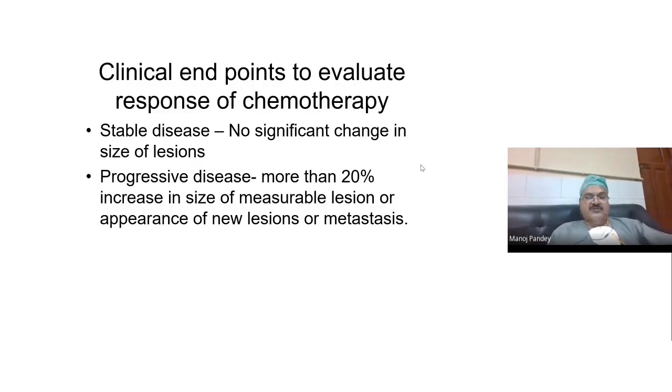For example, if a 10 cm tumor becomes 12 cm, you call it progression. Or if there is a metastasis or a new lesion which appears, you also call it disease progression.